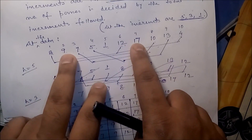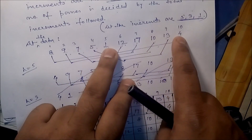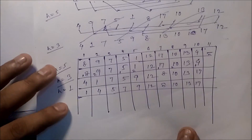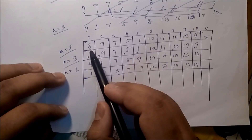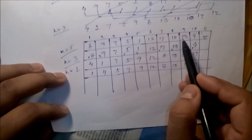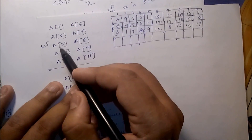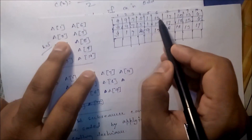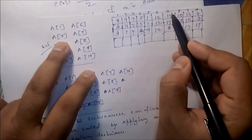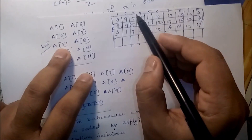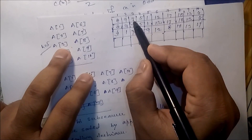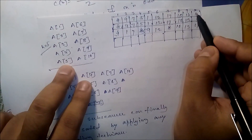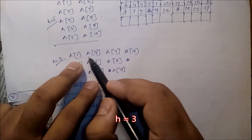For h equal to 5, compare a[1] with a[6]: that is 8 and 12, so keep 12 on the right. Then a[2] with a[7]: 9 and 17. Then a[3] with a[8]: 7 and 10. Then a[4] with a[9]: 5 and 13. And a[5] with a[10]: 1 and 4. After that, h equals 3, meaning we compare at positions 1, 4, 7, 10 and so on.